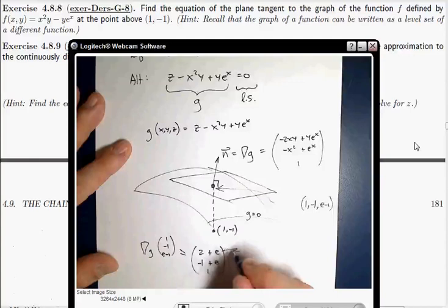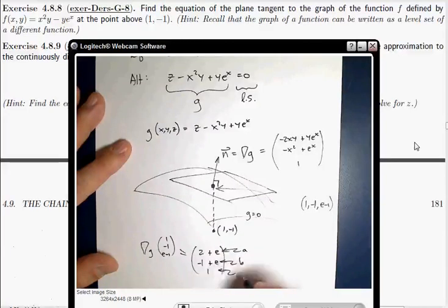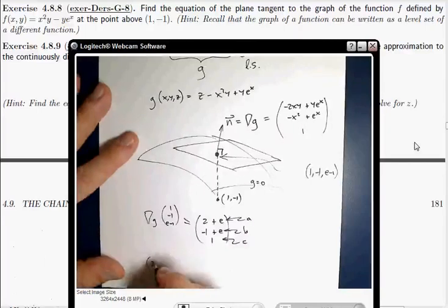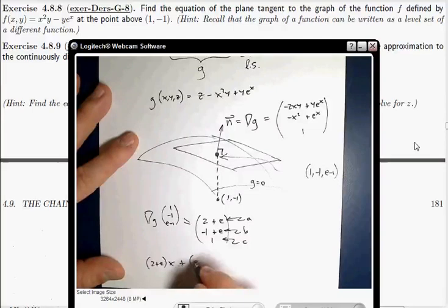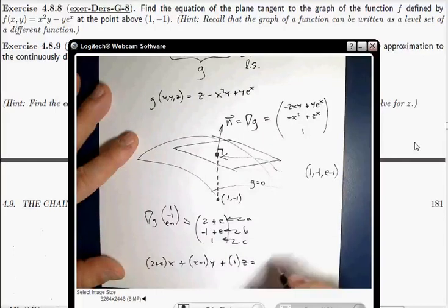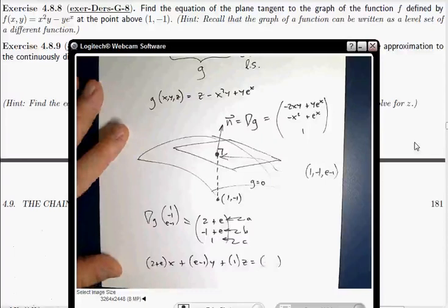So that's your a, that's your b, that's your c in your equation. And your equation is going to be a times x plus b times y plus c times z equals whatever the d ends up being.